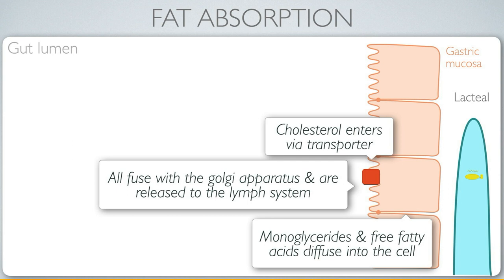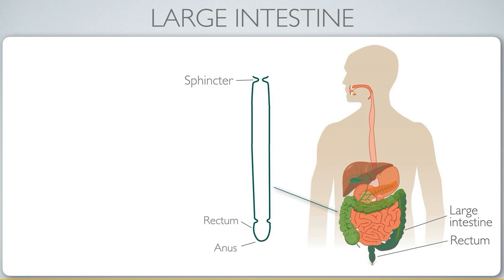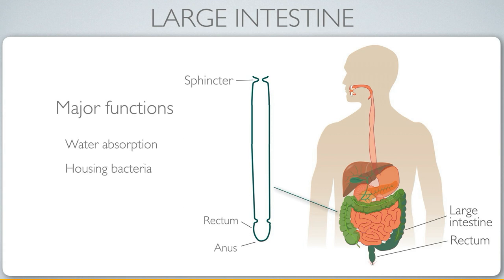That covers fat absorption. What remains for the meal occurs in the large intestine, which is called 'large' because of its large diameter — it is actually much shorter in length. It has sphincters separating it from the small intestine. Functions include significant water absorption (preventing diarrhea), and it houses the gut microbiome whose metabolic products provide essential vitamins and minerals.